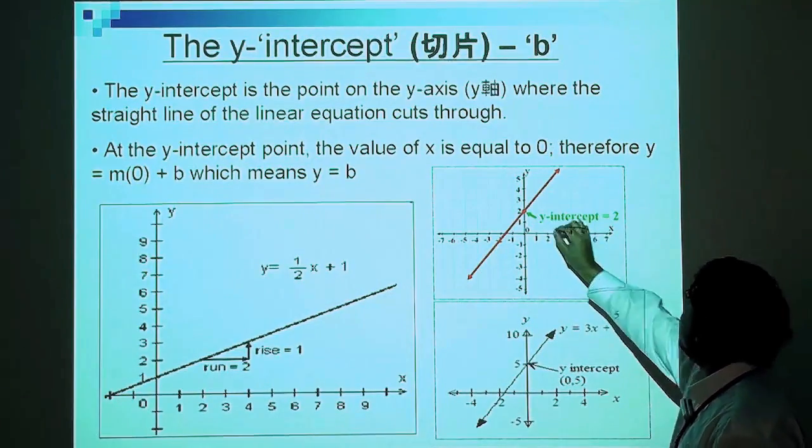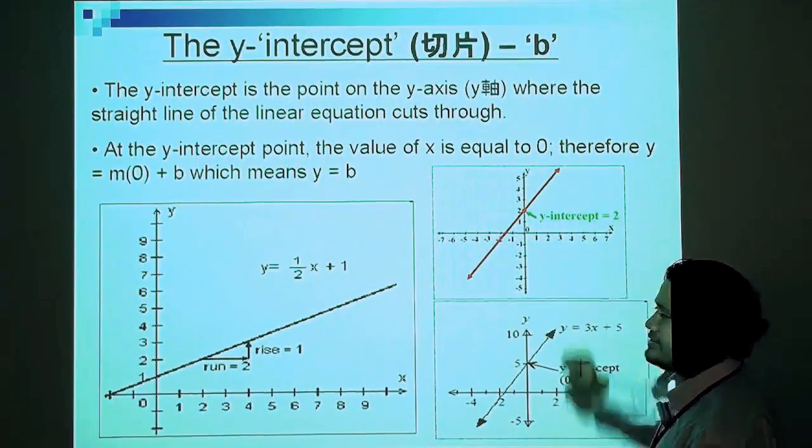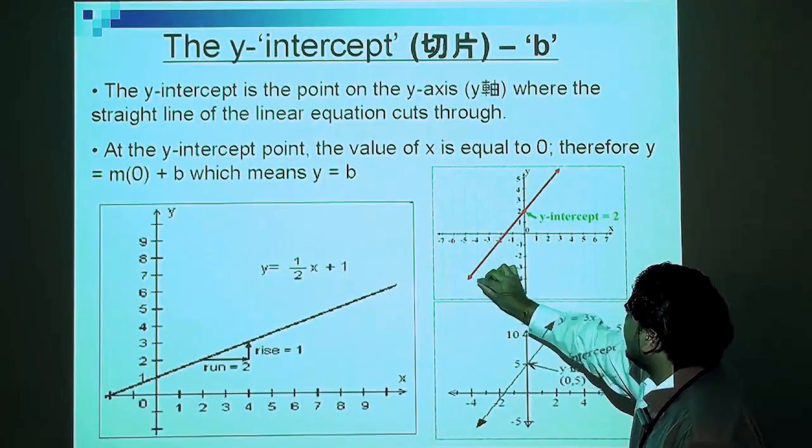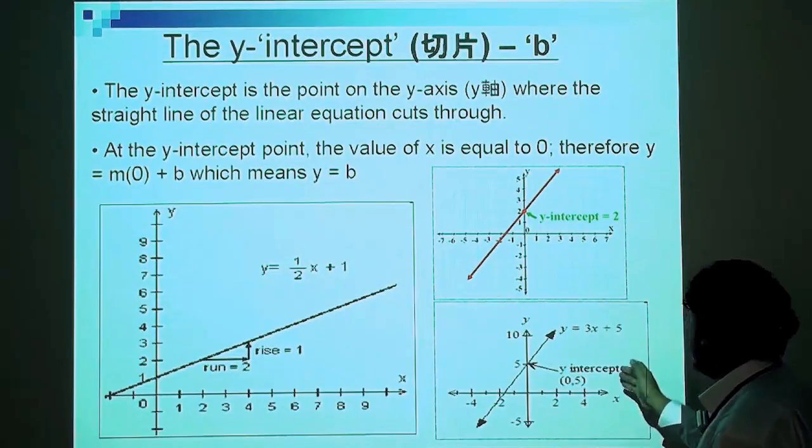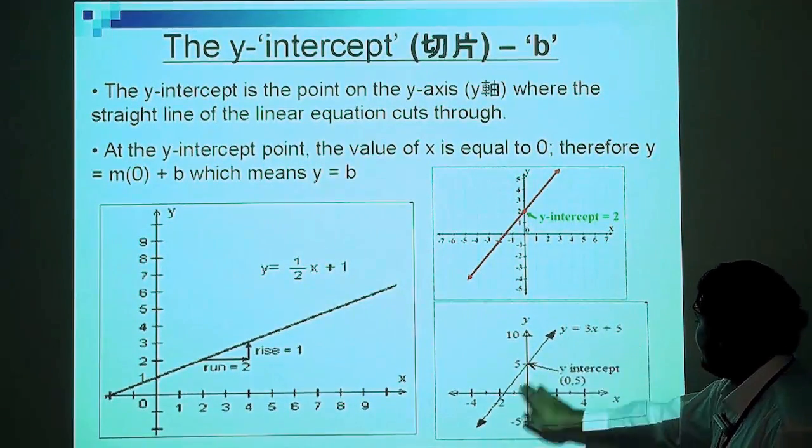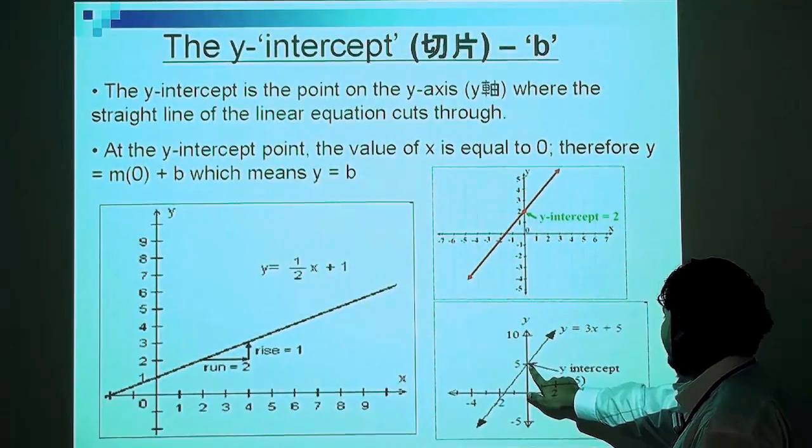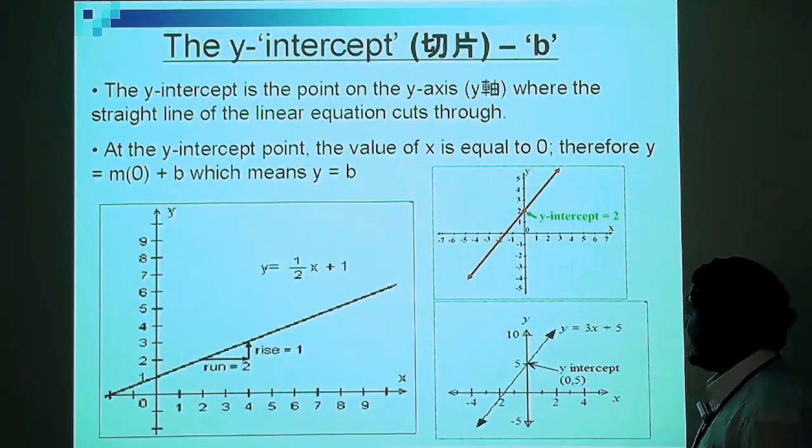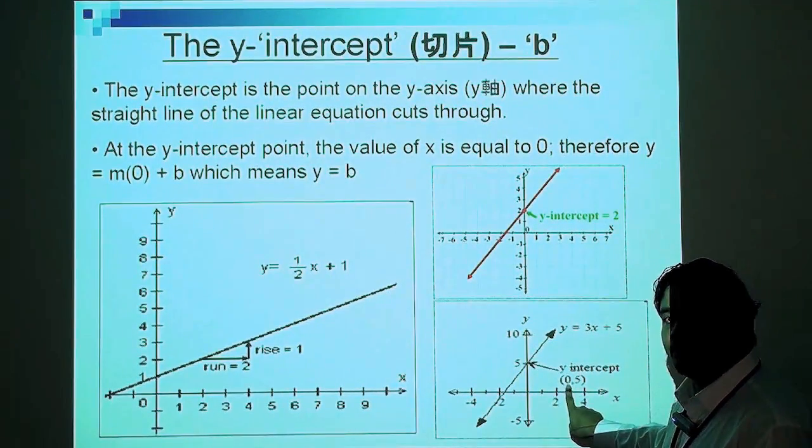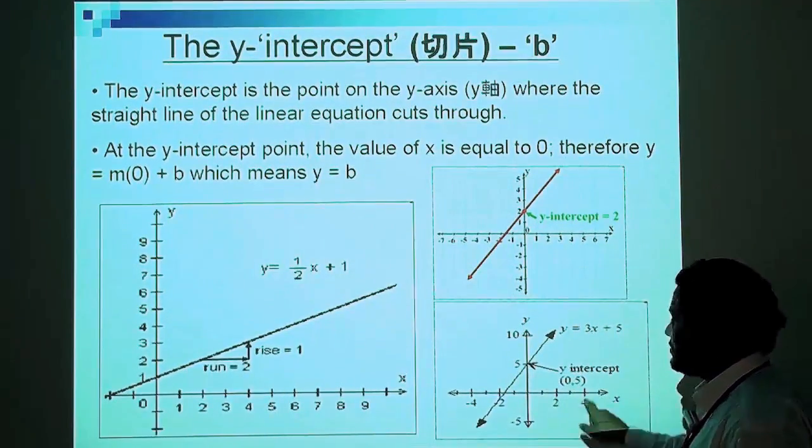The y-intercept here is positive 2. And what we can also tell about this line is it has a positive gradient or positive slope as the line is going upwards. Another example here, for the line y equals 3x plus 5, we can tell that the y-intercept is positive 5. Again, at the y-intercept, the value of x equals 0. So at that point, the coordinate of that point is (0,5).